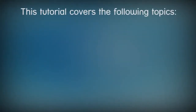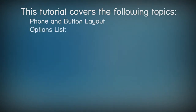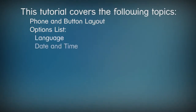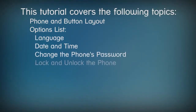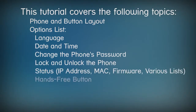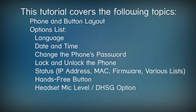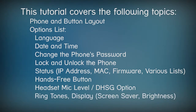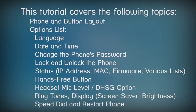In this tutorial, I'll cover the following topics. We'll take a quick look at the layout of the phone, then go through a series of options where you can choose a language, modify how the date and time are displayed, change the phone's password, lock and unlock the phone, check the status of the phone, define how the hands-free button works, adjust the headset microphone level, select DHSG, select a ringtone, change the screensaver and brightness settings, set up speed dial, and restart the phone.